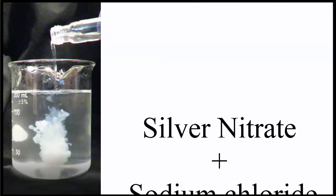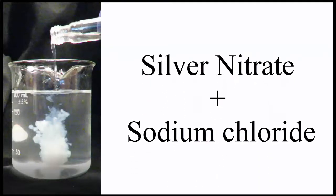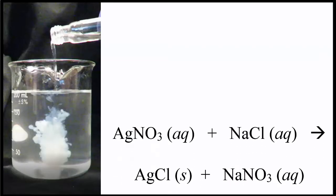In this video, we'll look at the chemical reaction for silver nitrate plus sodium chloride. So we're talking about silver nitrate, that's AgNO3. Then sodium chloride is NaCl.